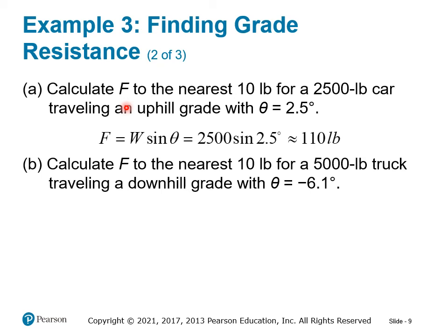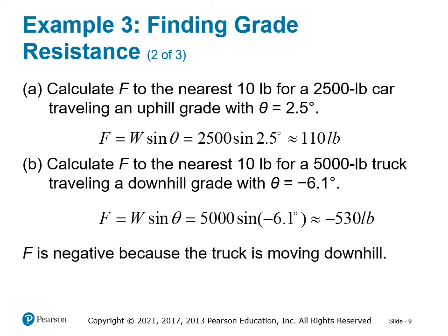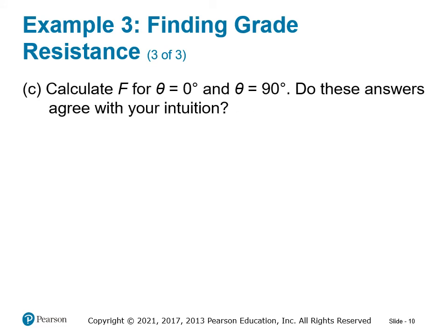In the second scenario, a 5,000-pound truck is going downhill on a 6.1-degree grade. Since it's downhill, the angle is negative. Plugging in: F equals 5,000 times sine of negative 6.1 degrees gives negative 530 pounds. A negative resistance actually helps the vehicle go faster. The force is negative because the truck is moving downhill.